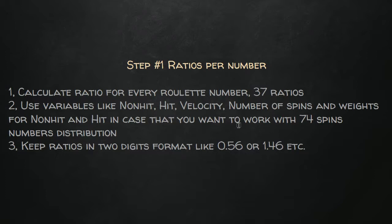I also recommend, based on my knowledge, that ratios should not be like 300 or 1000. It's good to keep the ratio something like 0.5, 1.5, or 2.5 — something simply lower — because then it's much easier to apply conditions in the future when you sum up the ratios and work with them.